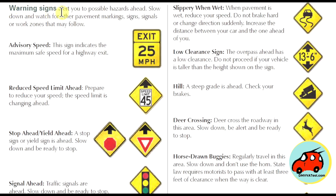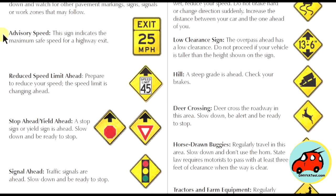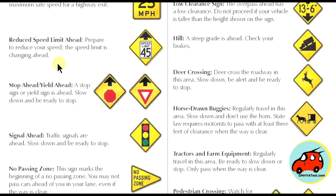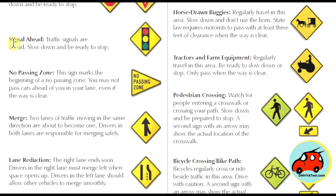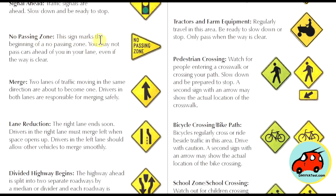Warning signs alert you to possible hazards ahead — slow down and watch for other pavement markings, signs, signals, or work zones that may follow. Advisory speed signs indicate the maximum safe speed for a highway exit. Reduce speed limit ahead signs mean the speed limit is changing, so prepare to slow down. Stop ahead or yield ahead signs mean a stop or yield sign is coming — slow down. Signal ahead indicates traffic signals are ahead — slow down and be ready to stop. No passing zone signs mark the beginning of a no-passing zone; you may not pass cars ahead of you in your lane, even if the way is clear.